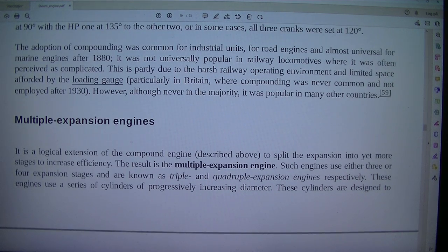The adoption of compounding was common for industrial units, for road engines and almost universal for marine engines. After 1880, it was not universally popular in railway locomotives where it was often perceived as complicated. This is partly due to the harsh railway operating environment and limited space afforded by the loading gauge, particularly in Britain, where compounding was never common and not employed after 1930. However, although never in the majority, it was popular in many other countries.